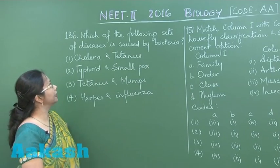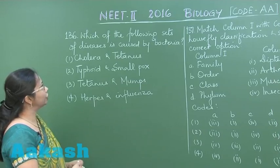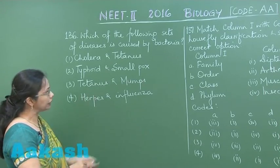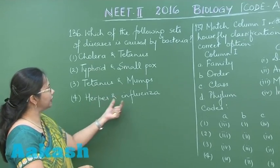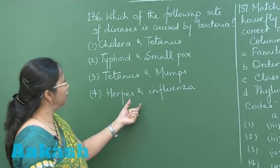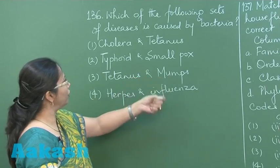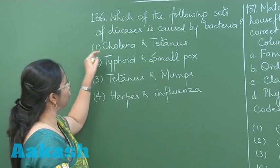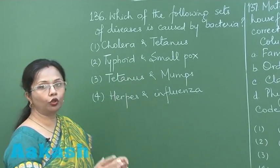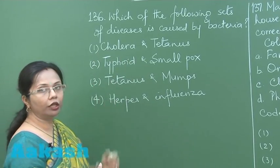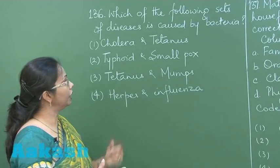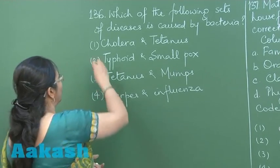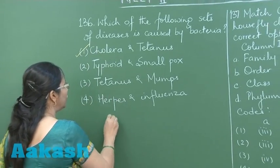Question 136: Which of the following sets of diseases is caused by bacteria? Looking at the choices, herpes and influenza are viral, mumps is viral, smallpox is viral. But in the first choice, cholera and tetanus are both bacterial — cholera being caused by Vibrio cholerae and tetanus by Clostridium tetani. So our answer is option number one.